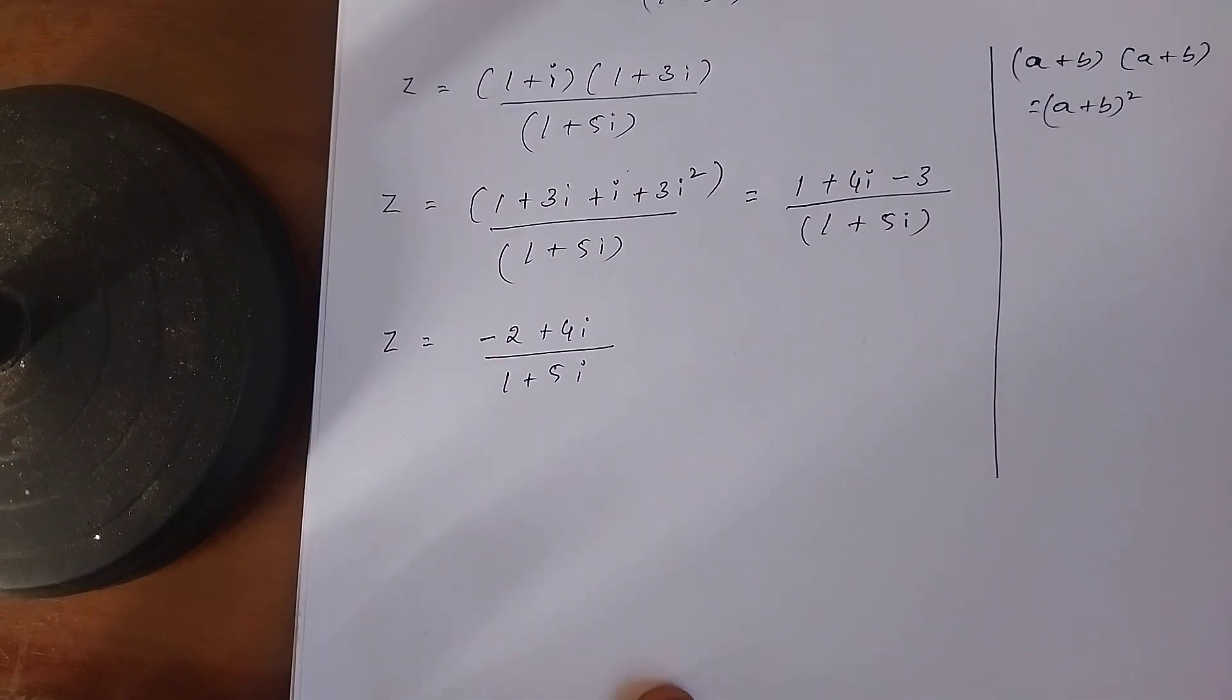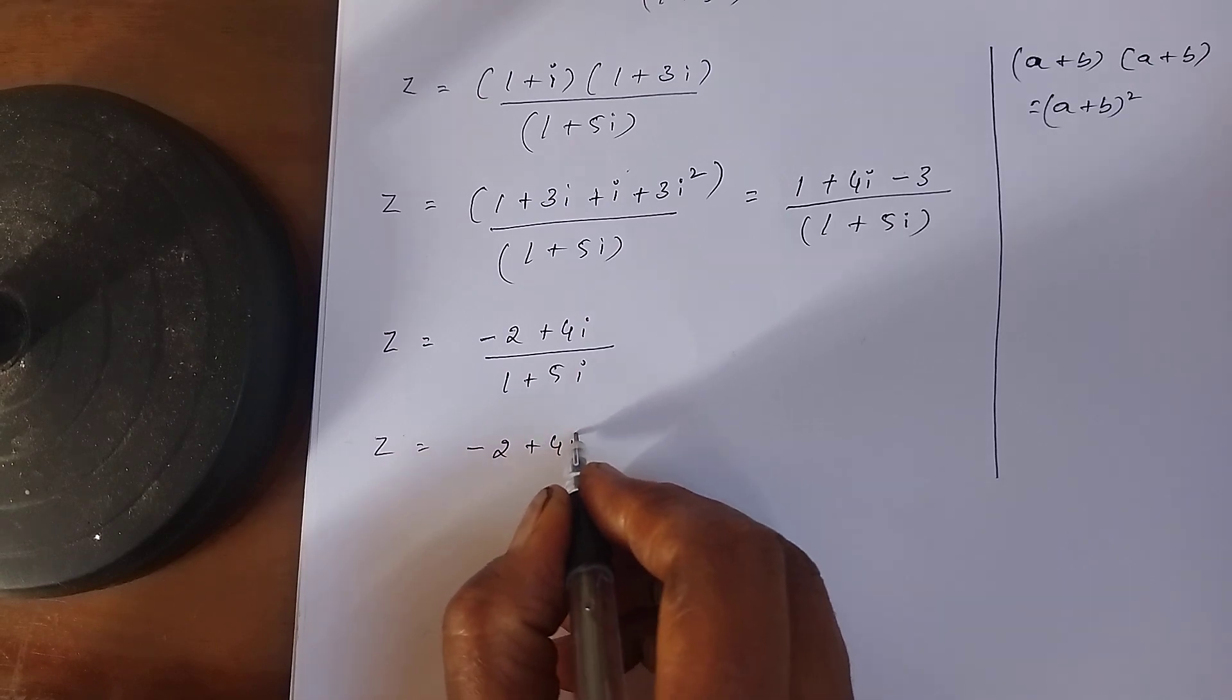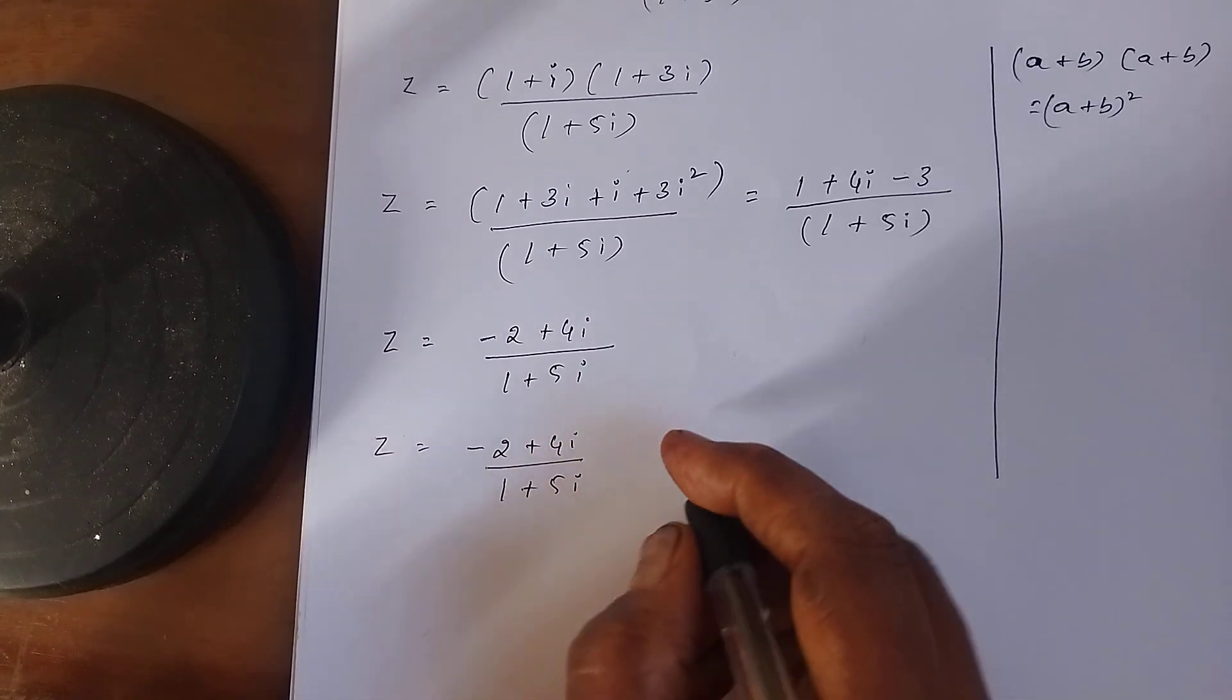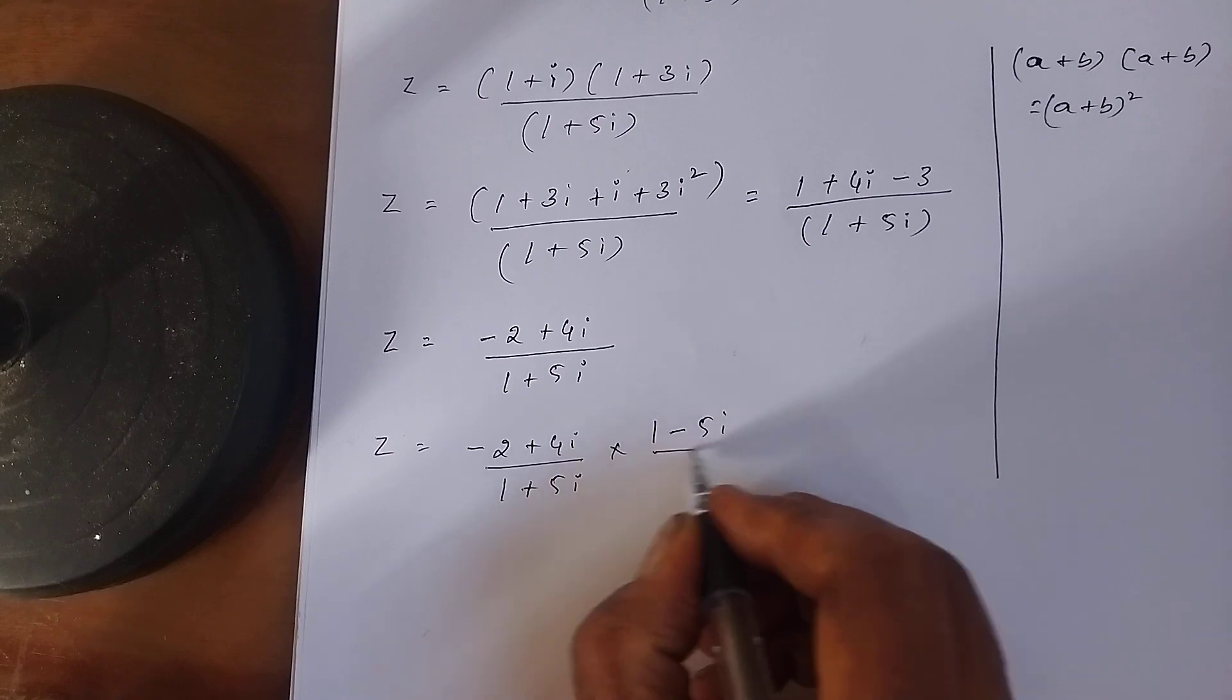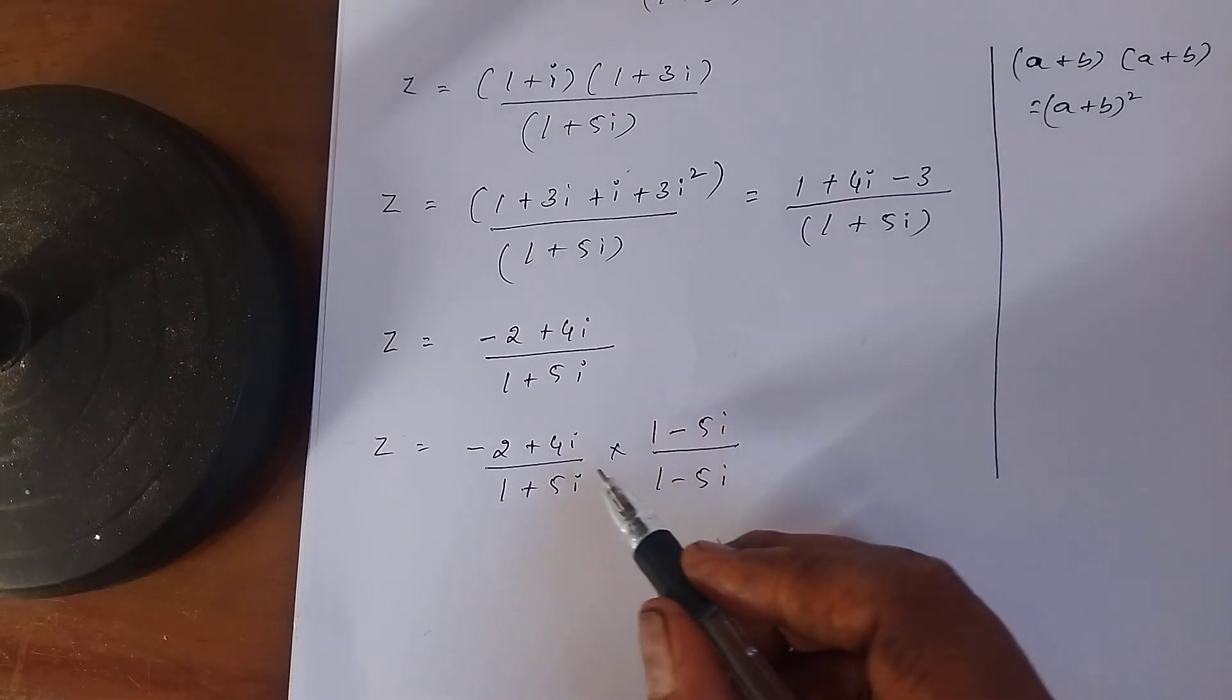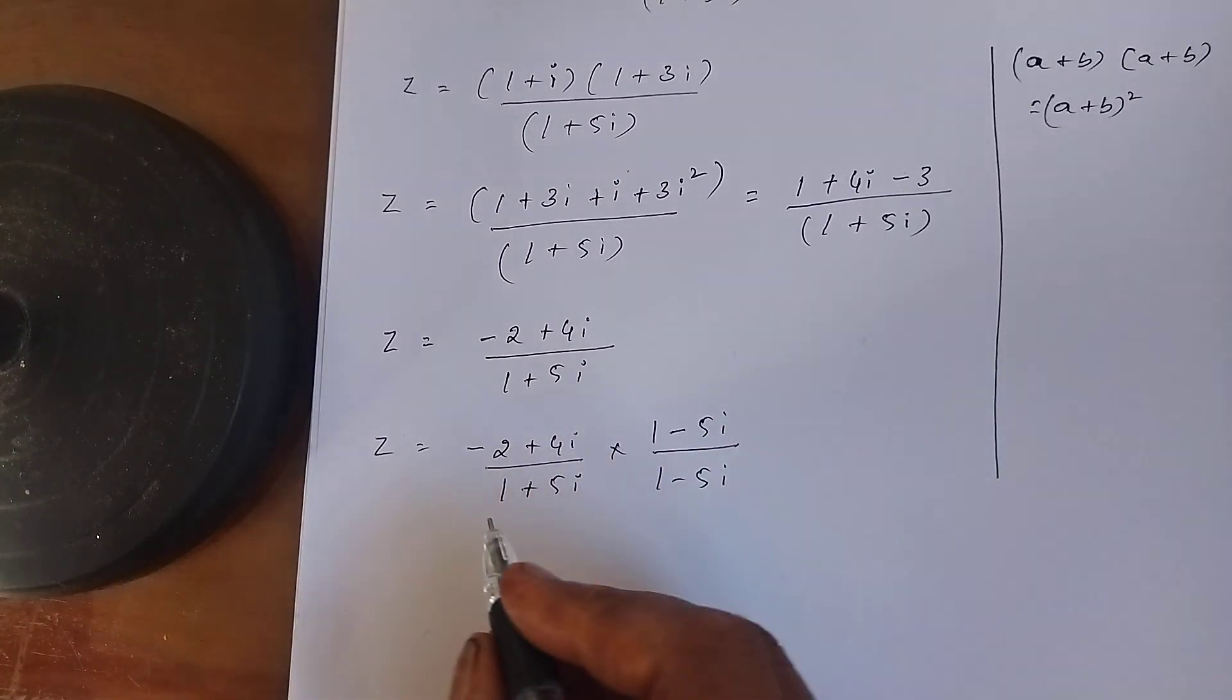Now what you will do? You rationalize the denominator. You write this question as it is. Now rationalizing the denominator: multiply both numerator and denominator by 1-5i divided by 1-5i.